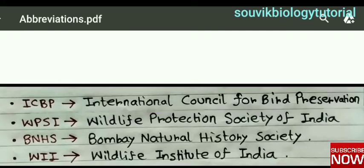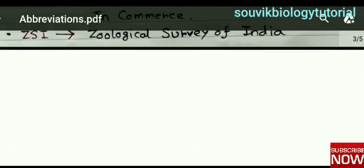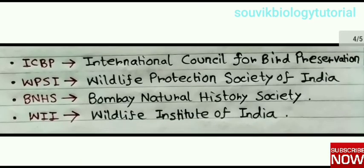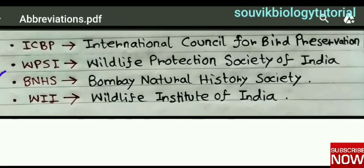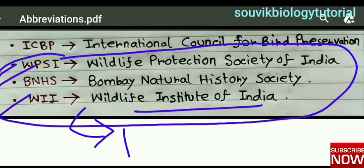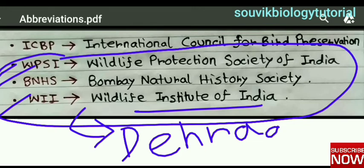Next, from India: ZSI — Zoological Survey of India, WPSI — Wildlife Protection Society of India, BNHS — Bombay Natural History Society, and WII — Wildlife Institute of India. You should also know that WII, Wildlife Institute of India, is located at Dehradun, India.